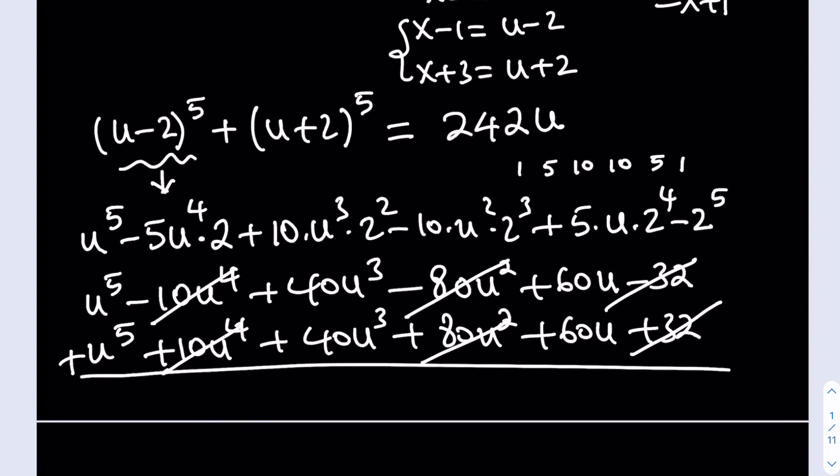So u^5 + u^5 is going to be 2u^5 plus I'll be getting 80u^3 plus 160u. And the right hand side is equal to 242u.